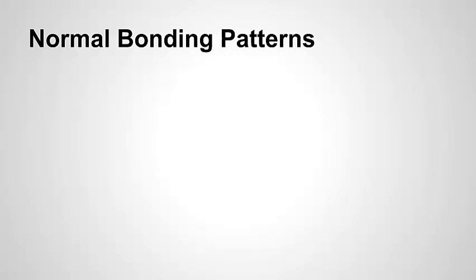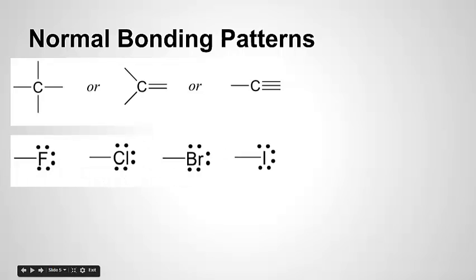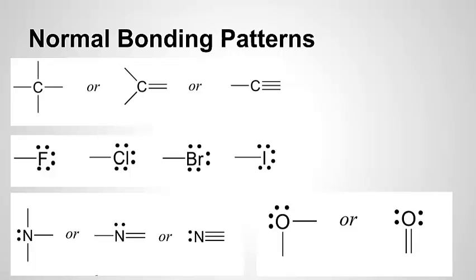If you want a shortcut, you should recognize the normal bonding patterns for some atoms — meaning the number of bonds a particular atom wants to form, usually determined by the number of unpaired electrons. Carbon likes to form four bonds. Halogens have seven electrons with one unpaired, so they like to form one bond. Nitrogen has three unpaired electrons and wants to form three bonds. Oxygen has two unpaired electrons and prefers to form two bonds. If an atom is bonding in its normal bonding pattern, its formal charge will be zero.